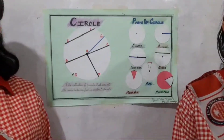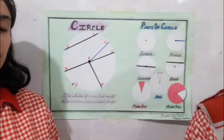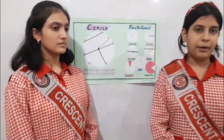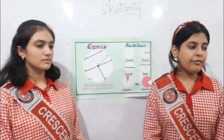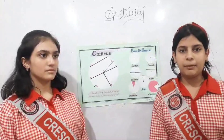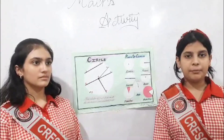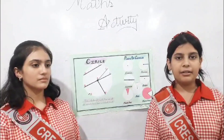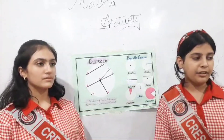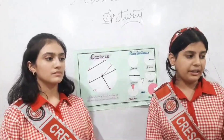All the parts of a circle are incomplete without the central part of a circle. Because if a circle has no center part, then the diameter, radius, and arcs cannot be made.